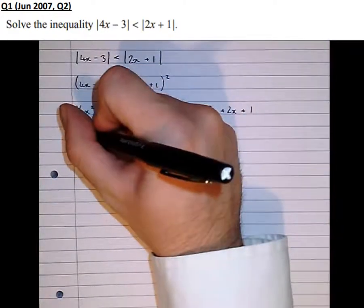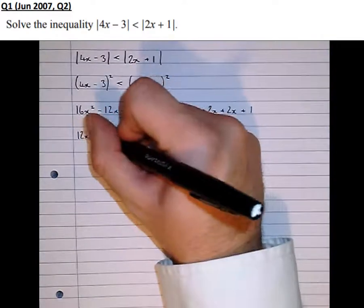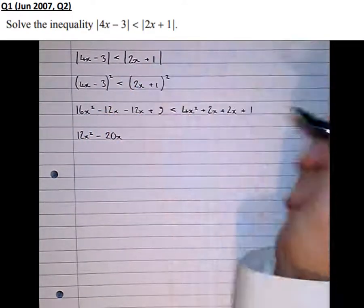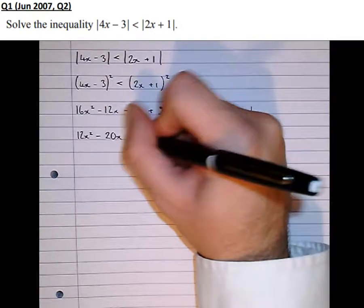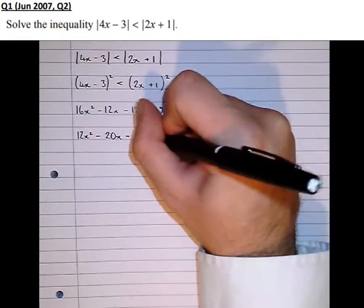Okay, simplifying, we get 12x squared minus 20x, then 9 take 1 is 8, so plus 8 is less than 0.